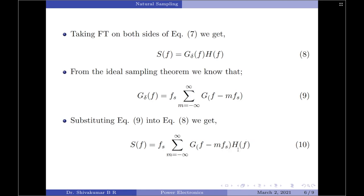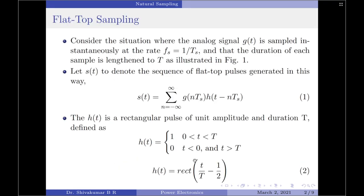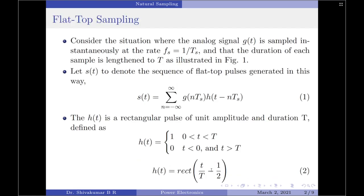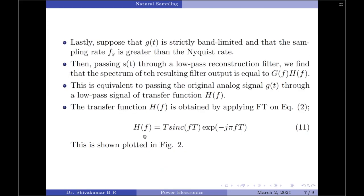The spectrum also includes the transfer function H(f), which comes directly from equation 2 — our rectangular pulse. If we pass the sampled signal s(t) through a low-pass reconstruction filter, the spectrum at the output equals G(f) times H(f). This is equivalent to passing the original analog signal g(t) through a low-pass filter with transfer function H(f), obtained by applying the Fourier transform to equation 2.